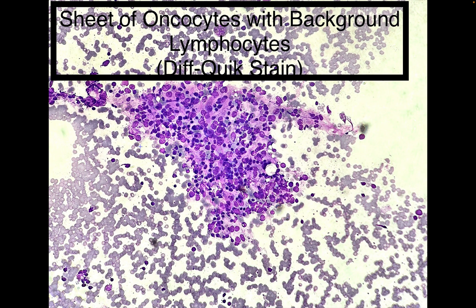The next entity is Warthin tumor, otherwise known as papillary cystadenoma lymphomatosum. It generally arises in the 7th to 9th decade, is located in the parotid tail, and is PET-avid. Sometimes it is bilateral, and if so, it's generally in older men who smoke.